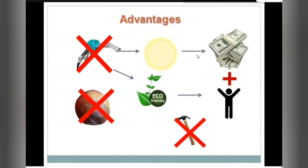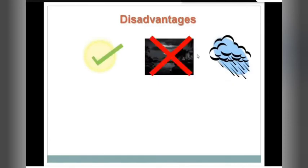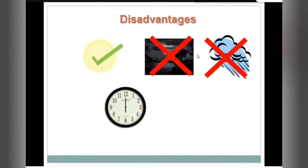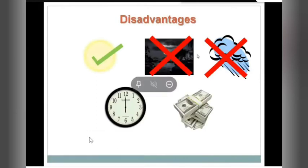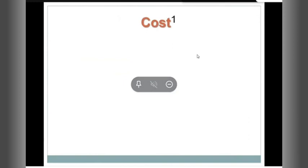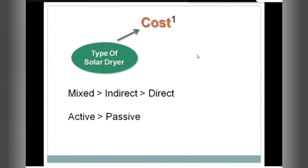Nature loves balance, so if there are advantages there are disadvantages too. You can use a solar dryer on a sunny day, but not at night or on cloudy or rainy days. Second, it is very time consuming compared to an electrical dryer. Third, it has a very high initial investment. The cost depends on two things: first, the type of solar dryer — mixed mode costs the most, followed by indirect, then direct, which is the simplest and cheapest. For active versus passive, since active adds fans and pumps, it costs more.